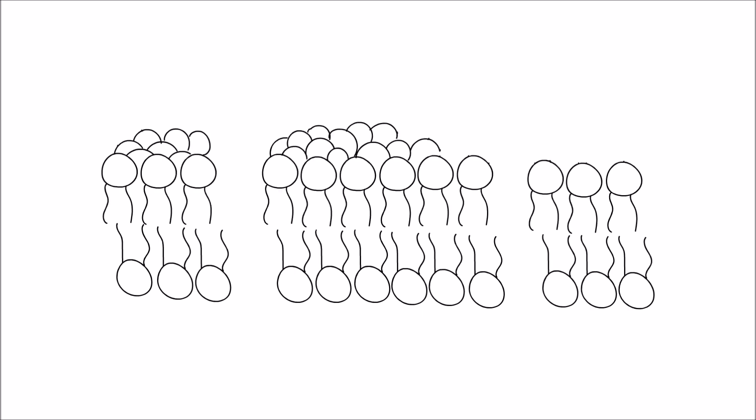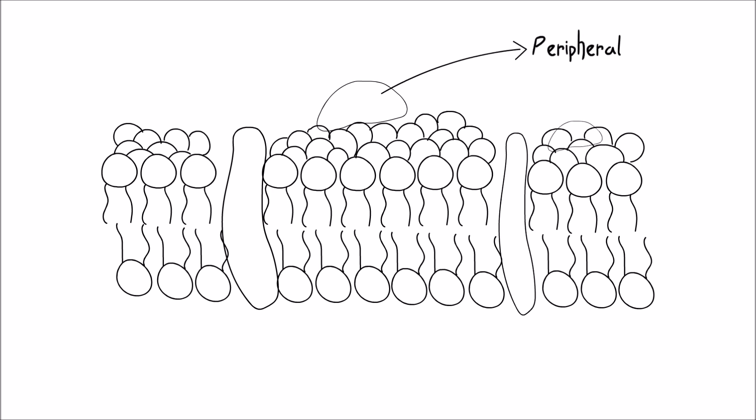The phospholipid bilayer is integrated with protein molecules distributed throughout the layer. Some proteins are bound to the external part of the layer. These are called peripheral proteins.